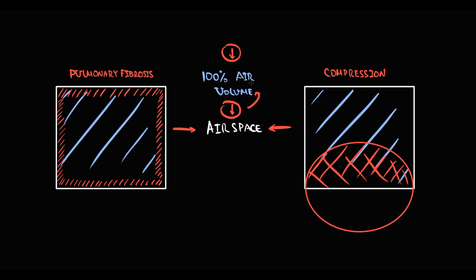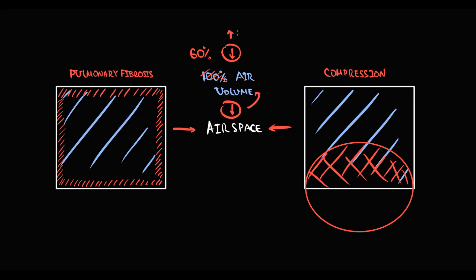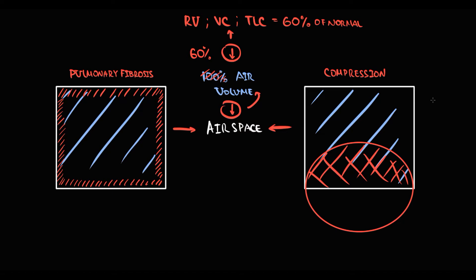For example, if pulmonary fibrosis or compression takes out 40% of air space, then we have only 60% of air space that can be filled with air. As a result, on spirometry we will see a decrease in all types of volume — residual volume, vital capacity, and total lung capacity. All of them will be just 60% of normal. So all restrictive values will decrease proportionately to the decrease in air space.